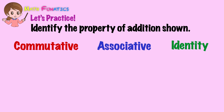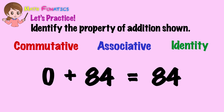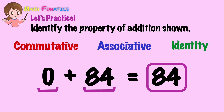Next, the question is 0 plus 84 equals 84. One of the addends is 0 and the other is 84. 84 is retained as the number since it was just added to 0. Correct — it's identity property.